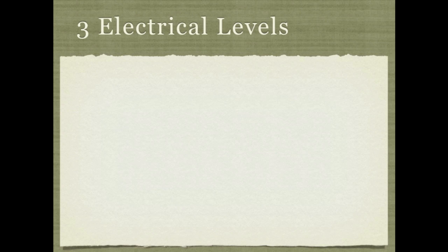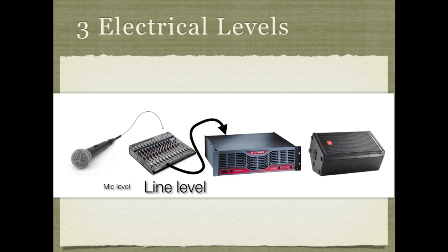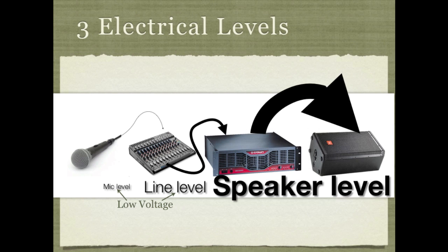In a typical sound system we've got a microphone, a pre-amplifier, a power amplifier, and a speaker, which gives us three levels. There's mic level and line level — both of these are low voltage levels. And then in the connection from the power amp to the speaker we've got speaker level, which is high voltage.